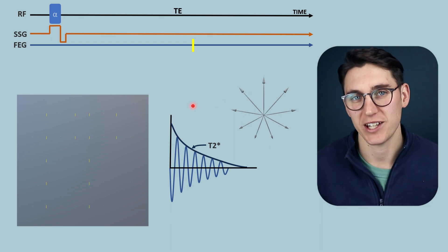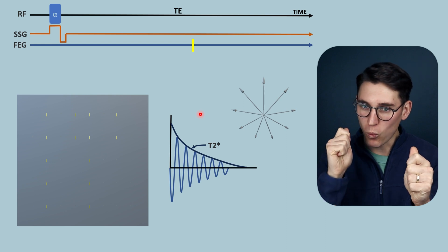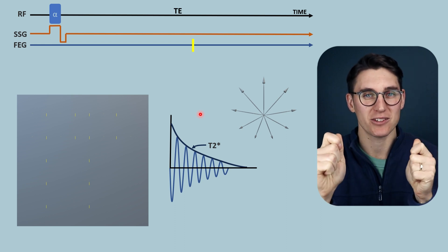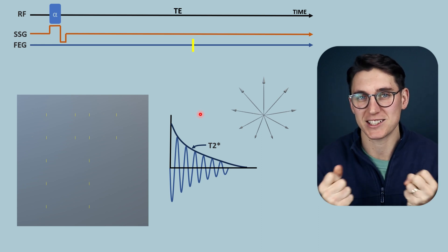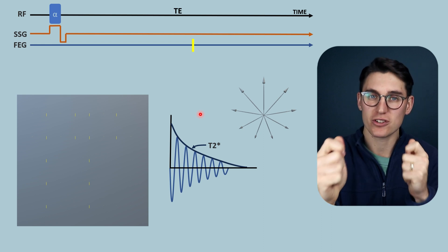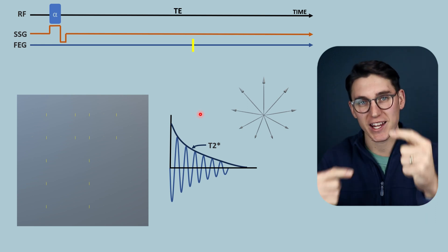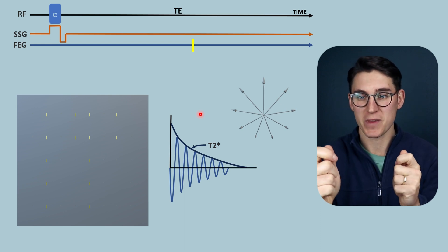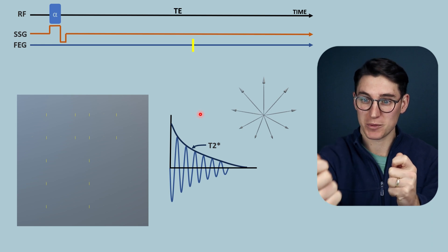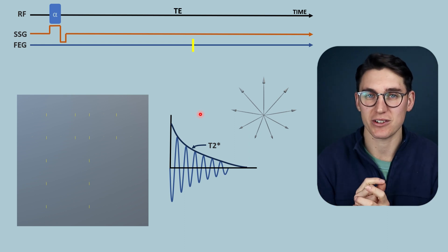In gradient echo imaging we don't use that 180 degree RF pulse. The way I like to think about it: imagine two spins in a race — one fast, one slow. In spin echo, one processes faster than the other based on local magnetic field inhomogeneities, which are constant within our sample. The 180 degree RF pulse changes the direction of the race, so the faster spin — still traveling faster — now needs to catch up with the slow spin. That's the analogy of the direction of the race changing based on that 180 degree flip in spin echo imaging.